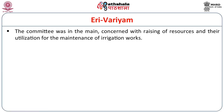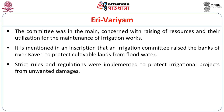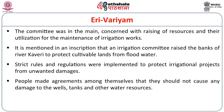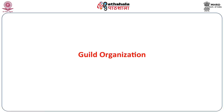The Erivarium body consisted of six members who held office for 360 days and then retired. It was mainly concerned with raising resources and their utilization for the maintenance of irrigation works. An inscription mentions that an irrigation committee raised the banks of the Cauvery River to protect cultivable lands from flood water. Strict rules and regulations were implemented to protect irrigation projects; people made arrangements not to cause damage to wells, tanks, and water sources. Any deliberate attempt to damage irrigation tanks was considered a crime, and offenders were severely punished by the Chola state.